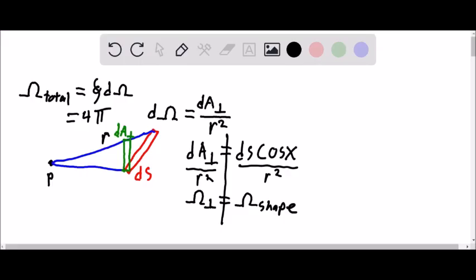Well, first of all, we'll notice DA perpendicular is equal to some infinitesimal width times some infinitesimal height, which we can convert into coordinates of latitude or longitude in the case of integrating over a sphere.